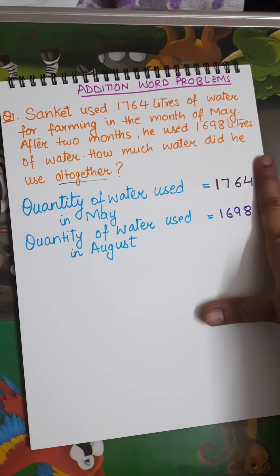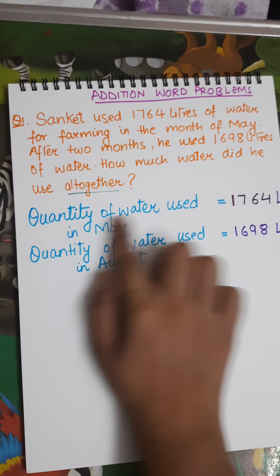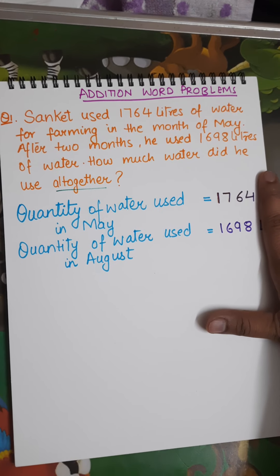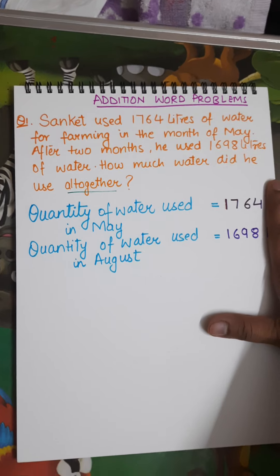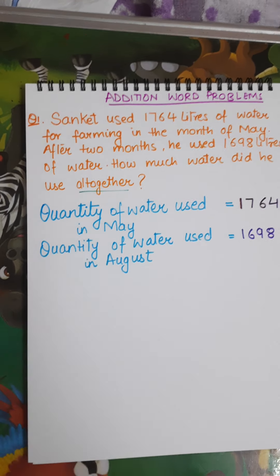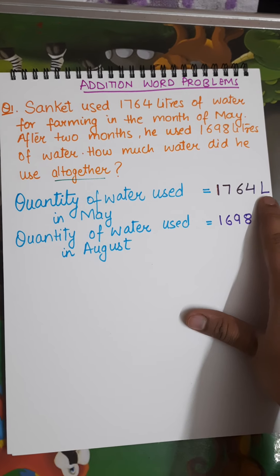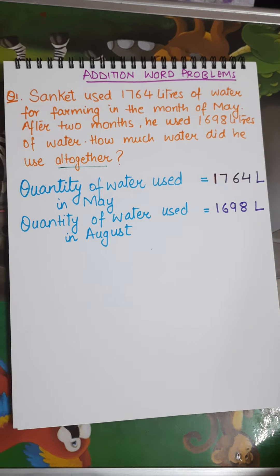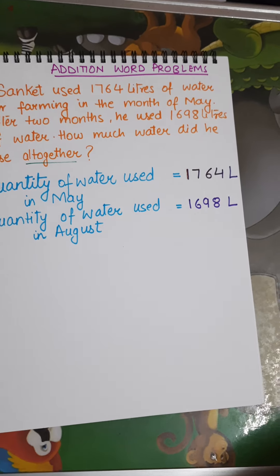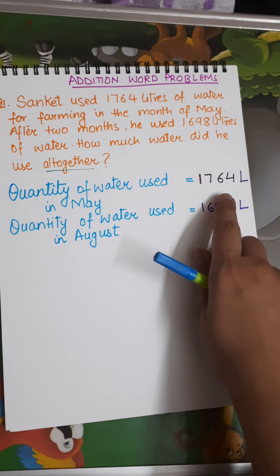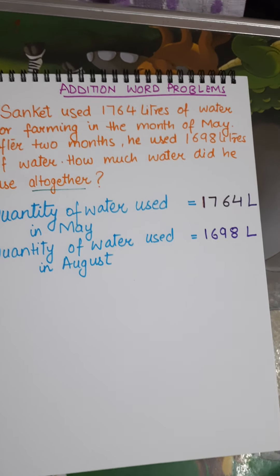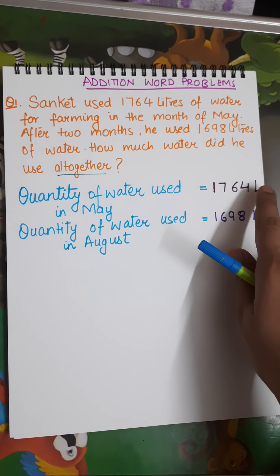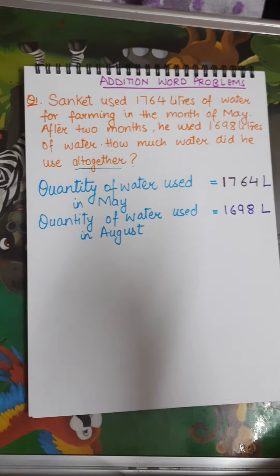Litres are very crucial to write. If you don't write 'L' for litres, the statement is incomplete — it's just a bare number. Just like when your parents buy vegetables or milk from the market, they say 'bhaiya, give me one kg of potato' — those are measuring units. We will study these units in detail afterwards, but you are already aware of them from real life.